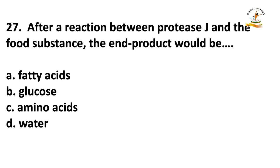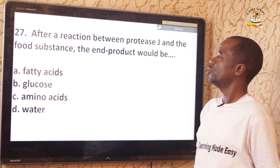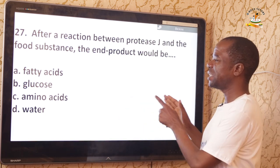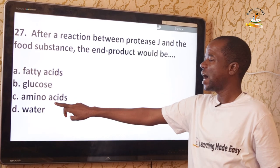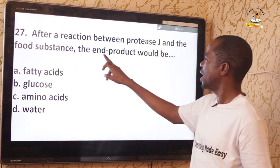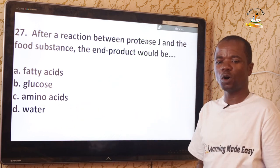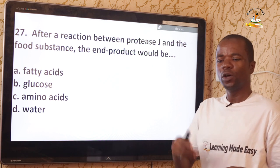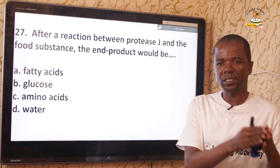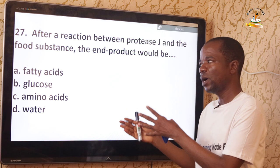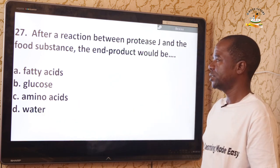Question 27: After a reaction between protease G and the food substance, the end product will be amino acids — option C. Protease is a digestive enzyme that acts on proteins. Proteins are not broken down directly to amino acids; they are first digested to peptones, then to polypeptides, and finally polypeptides are broken down to produce amino acids.